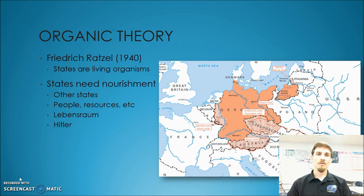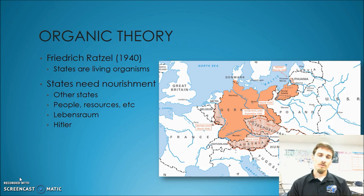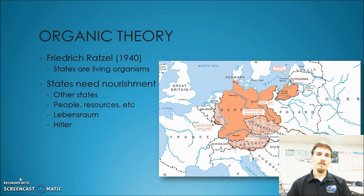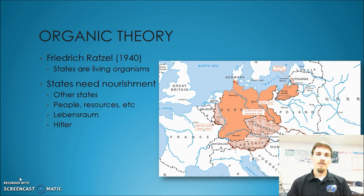So the first theory we're going to look at is called the organic theory. The organic theory was developed by a man by the name of Friedrich Ratzel in the 1940s. He was a German geopolitician, and this is important because this is of course the time when Adolf Hitler was in control in Germany and World War II had started. It helps us to understand some of the moves that the Germans had made leading up to World War II. If you also understand the context of history, this is a time period when the idea of social Darwinism was very big.